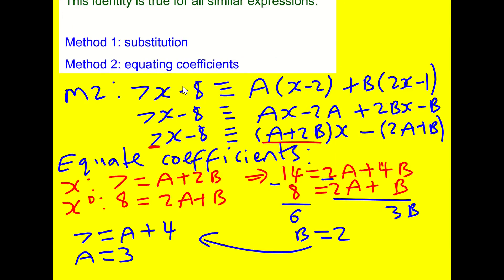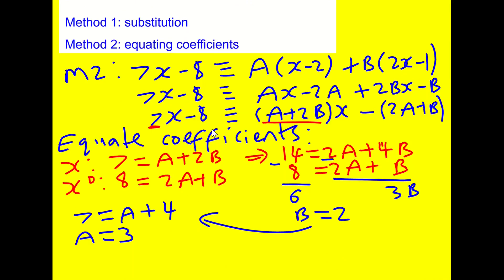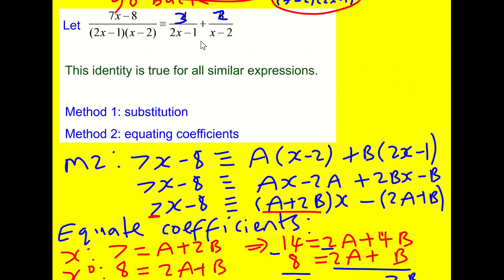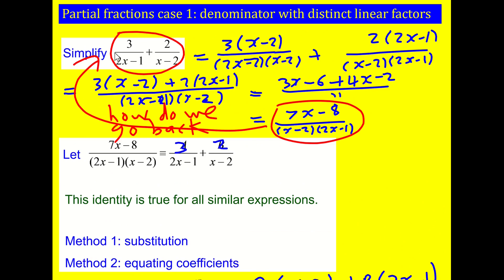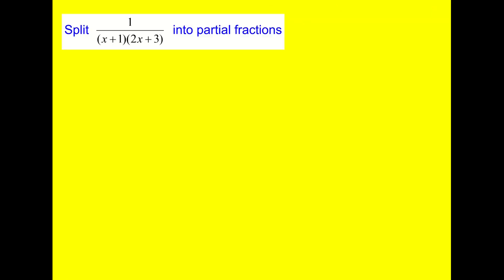Two methods: substitution and equating coefficients. I prefer substitution, but there are times when a sneaky bit of equating coefficients makes life easier — we'll see when later on. Now, I've been talking for about 14–15 minutes. Two examples on partial fractions done. We're going to do another two examples, but you might want to try them yourselves first.